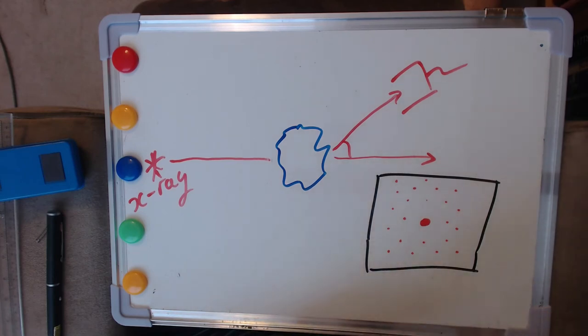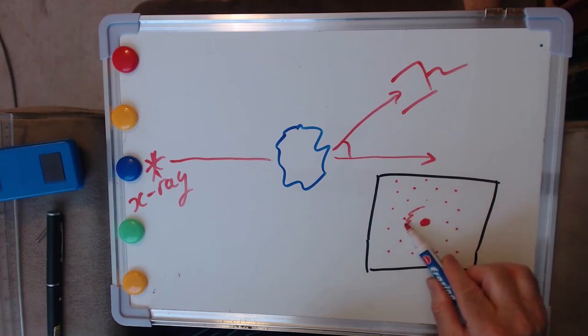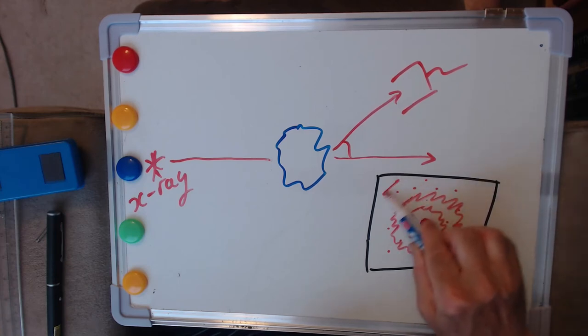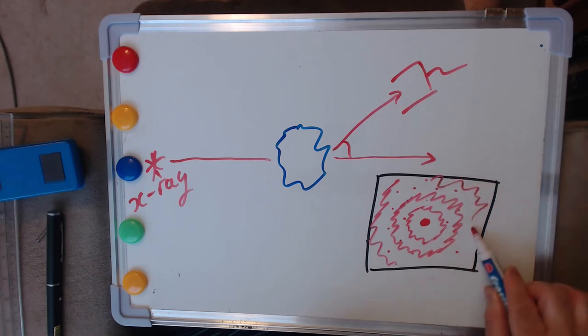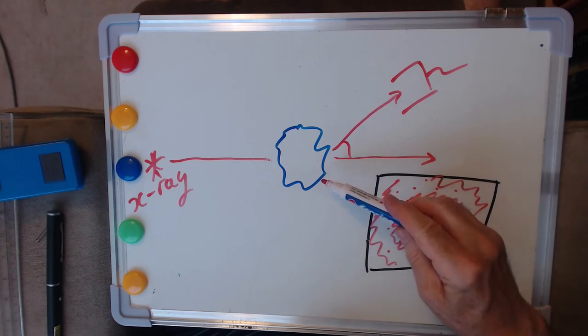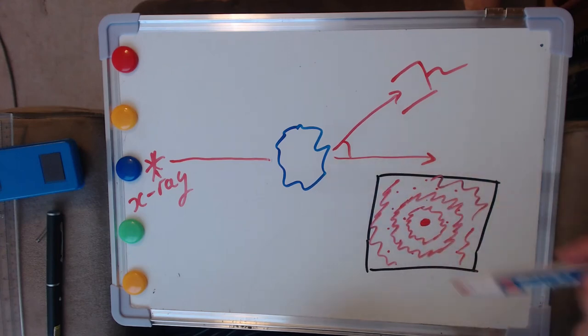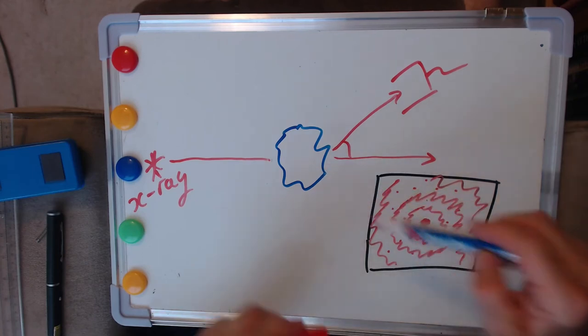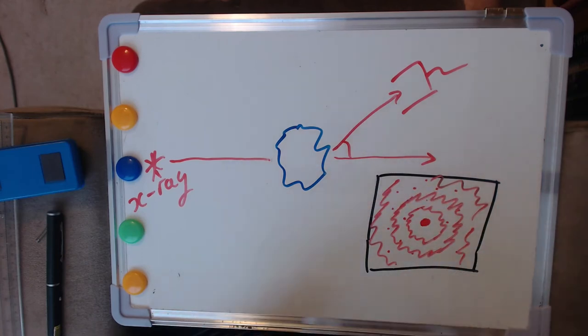And rather than getting a series of sharp spots, we'd end up with rings, and they would be progressively more diffuse rings the further out from the center we came. And that pattern would then reflect the disordered arrangement of atoms in the glass. The same is true, by the way, if we're doing a diffraction experiment from a liquid. But I think we're moving away a little bit from what we want to do in terms of demonstrating physics in the house.